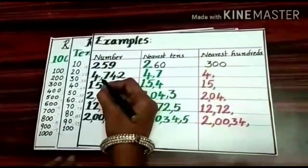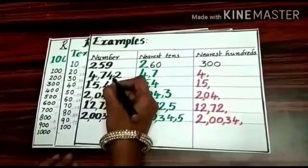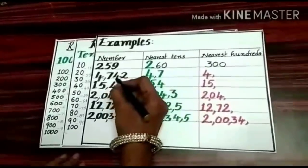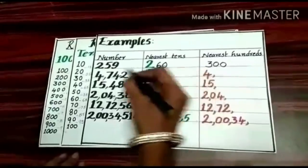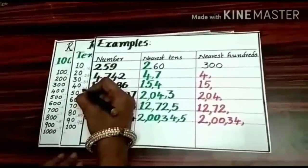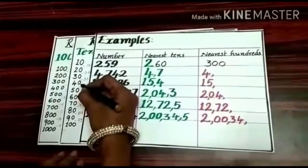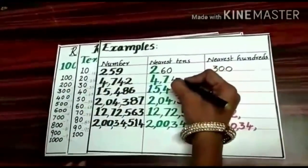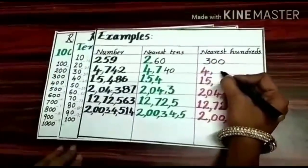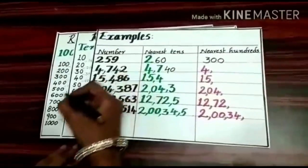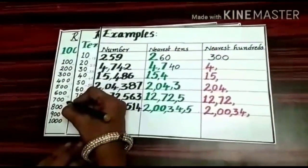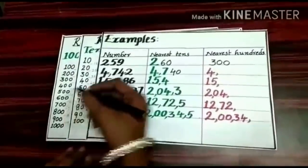Next example: 4742. For nearest tens, we consider only the tens place — the remaining digits stay the same. 42 lies between 40 and 50, and it is less than the middle number, so round down to the before 10 — that is 40. Now round 4742 to the nearest 100: 742 lies between 700 and 800, and it is less than the middle number, so round down to the before 100 — that is 700.